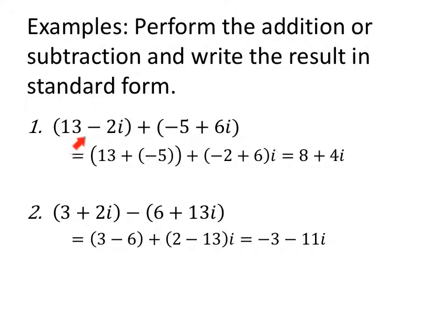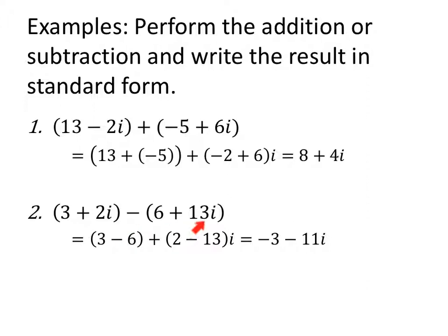If we're adding 13 minus 2i plus negative 5 plus 6i, I'm going to add 13 plus negative 5, and then add negative 2 plus 6 because they're both i's. So 13 and negative 5 gives me 8, plus negative 2 plus 6 gives me 4i. If I'm subtracting 3 plus 2i minus 6 plus 13i, I'm going to do 3 minus 6 plus 2 minus 13 i. Three minus 6 is negative 3, and 2 minus 13 is negative 11, so instead of adding a negative, I'm just going to subtract 11i. Make sure you collect like terms and distribute the negative as needed.